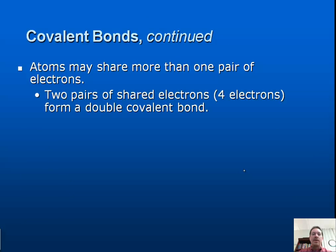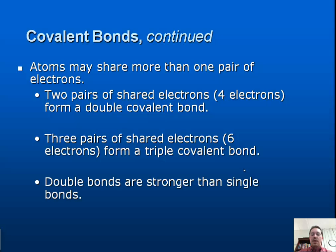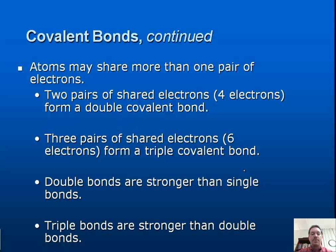Atoms may share more than one pair of electrons. Two pairs of shared electrons, or four electrons, form a double covalent bond. Three pairs of shared electrons, or six electrons, form a triple covalent bond. Double bonds are stronger than single bonds, and triple bonds are stronger than double bonds. For example, an O2 molecule is represented with two lines for the double bond — four electrons shared. A nitrogen molecule, N2, has three lines representing a triple covalent bond — six electrons being shared.